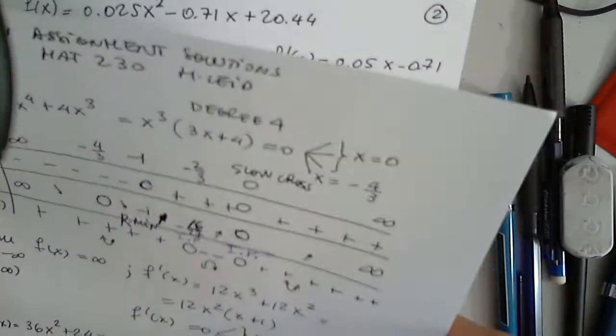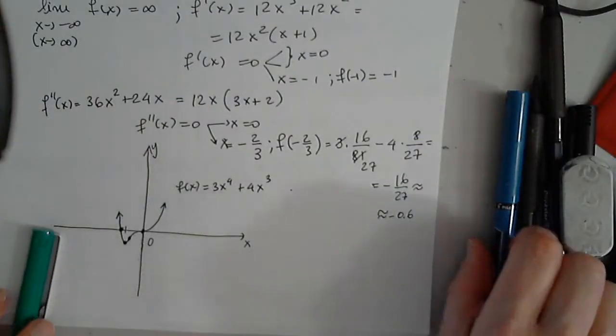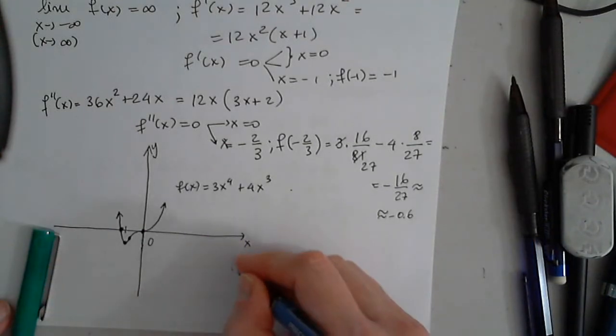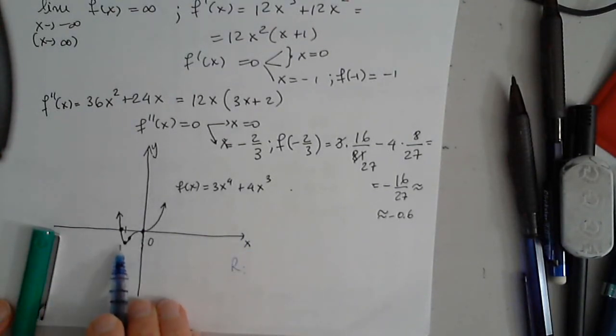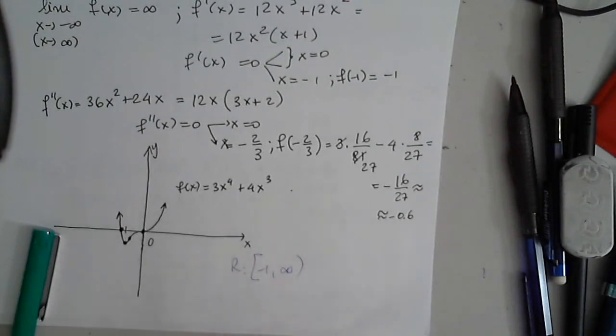And that's the graph. If we want to determine the range, which I should have asked about. So the range is between negative 1 and infinity. Negative 1, infinity.